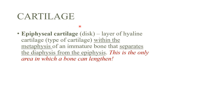This cartilage is the only area in which the bone can actually lengthen. That is why it exists only in immature bones — as the body matures it can no longer grow. Animals also don't grow their entire lives. This is the only area where a bone can become longer.